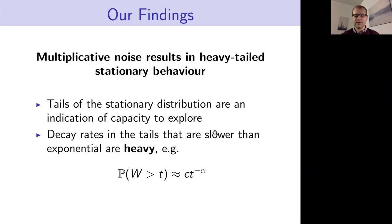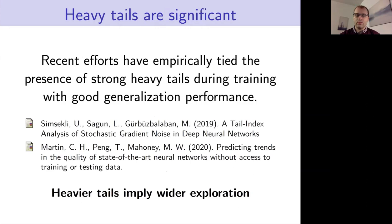In particular, we're interested in when the distribution's tail decays as a power law — usually of the form with alpha as the tail exponent of the distribution. Heavy tails are really significant in deep learning and are a big motivation for this project. Recent empirical work has tied the presence of strong heavy tails during training with good generalization performance. Heavy tails can imply wider exploration, so we can expect that the stochastic optimizer has greater potential to reach higher-quality minima. We're really interested in establishing heavy tails for stochastic optimizers.